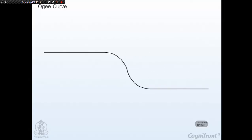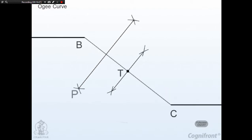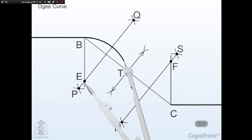An ogee-shaped arc tangent between two parallel lines: an ogee curve, also known as a reverse curve, is a combination of two arcs that are reverse of each other. Given parallel lines AB and CD, join points B and C and bisect line BC to obtain center point T. Further bisect segments BT and CT. From point B draw a perpendicular to cut bisector line PQ at E, and from point C draw a perpendicular to cut bisector line RS at F. With E and F as centers and radii EB and FC, draw arcs BT and CT. The arc BTC is the required ogee curve.